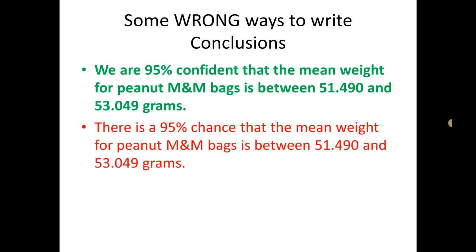The first one says there's a 95% chance that the mean weight for peanut M&M bags is between 51.49 and 53.049. Now the problem with this one is this word chance. Once we've collected our data and constructed our confidence interval, there's no more chance associated or probability associated with the interval. We can't use words like chance or probability because it's for an event that's already happened.